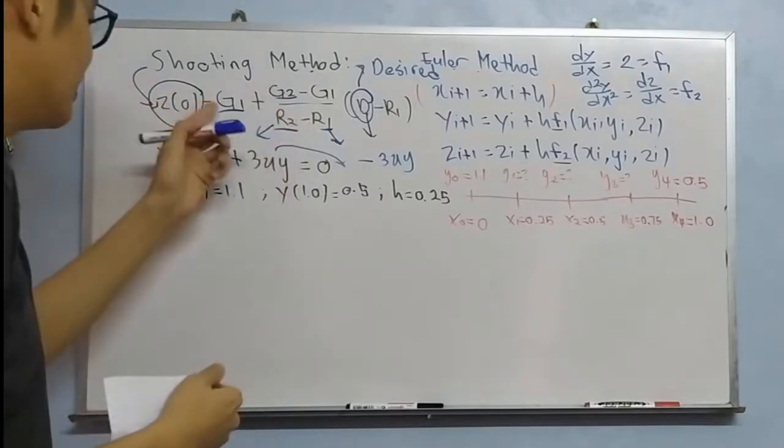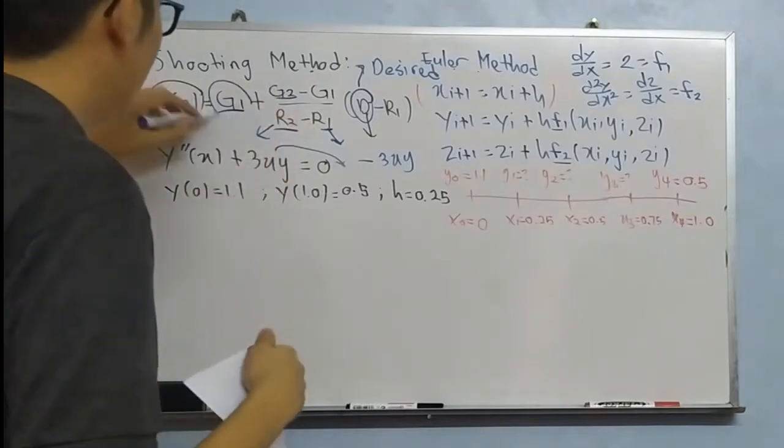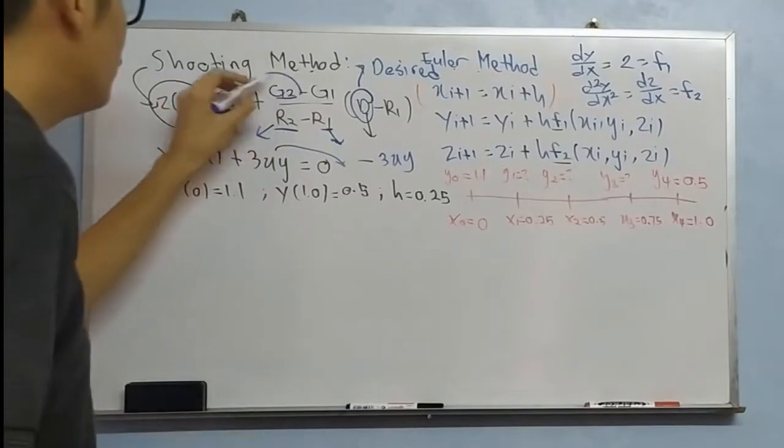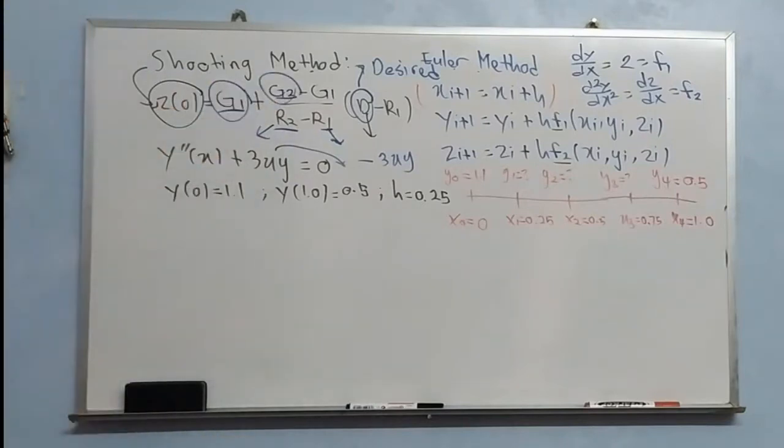While G1, G2 is the first guess, we will name it as G1. While G2, we will denote it as G2 for second guess.